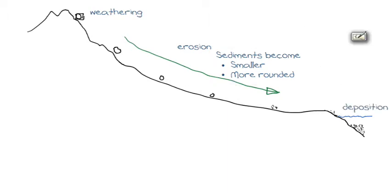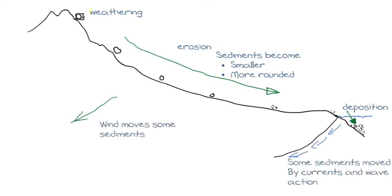This process of erosion where particles from the mountains are moved to the ocean happens predominantly in rivers through the movement of water. There is also a small amount of particles moved by wind, and we also get some particles being moved along the coast by currents and wave action.